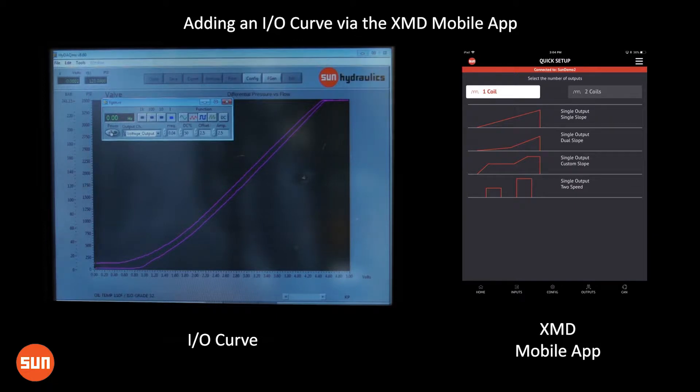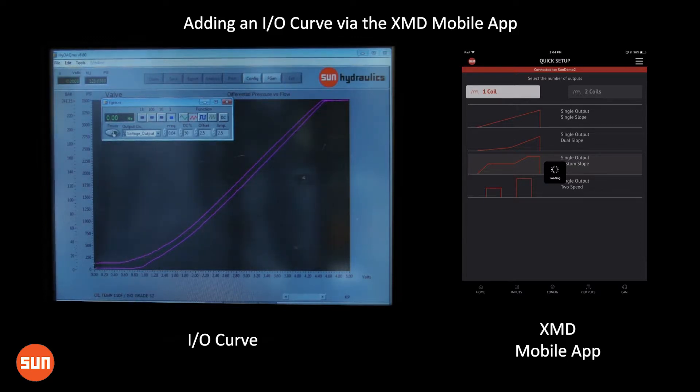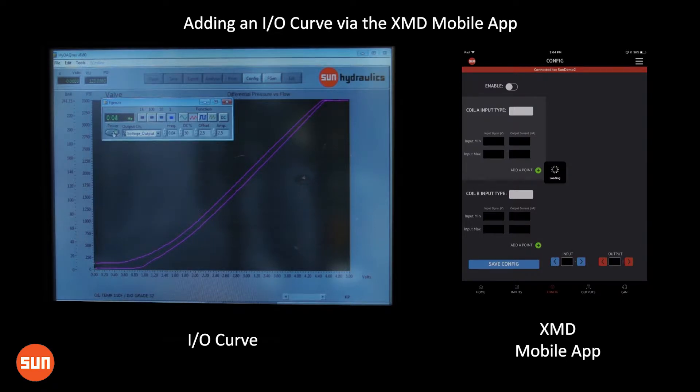I'm going to use the single output custom slope option from our quick setup profiles to give us a good starting point. So you can see how these quick setups can be utilized in real-world applications and understand what it's going to look like in real-time operation.